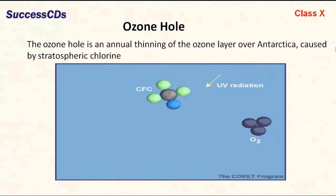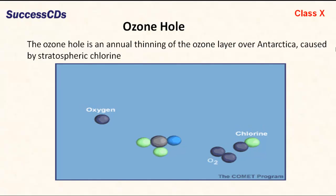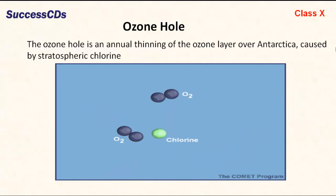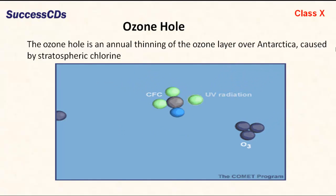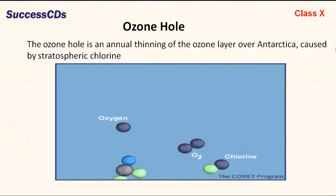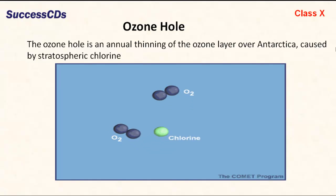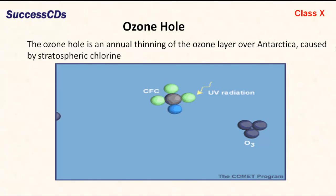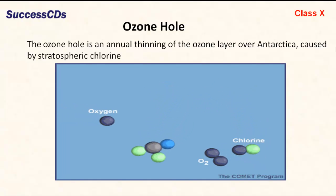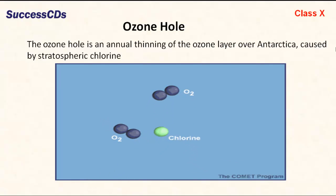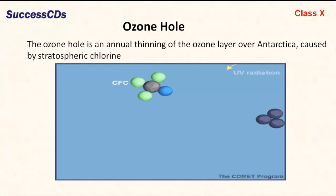The ozone hole is an annual thinning of the ozone layer over Antarctica, caused by stratospheric chlorine. As we can see in the animation, chlorine atoms from chlorofluorocarbons attack the ozone and form chlorine monoxide. Chlorine monoxide then combines with another oxygen atom to form a new oxygen molecule and a chlorine atom. Remarkably, a single active chlorine atom converts 1 lakh molecules of ozone into oxygen.